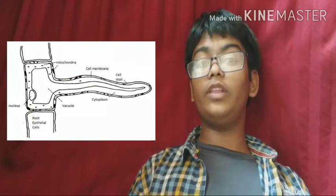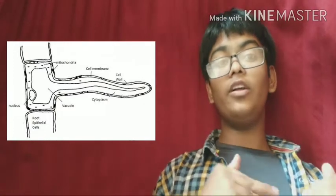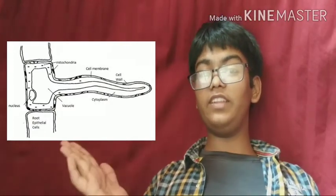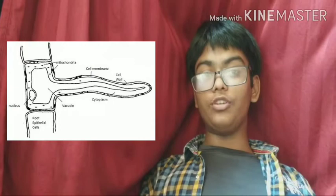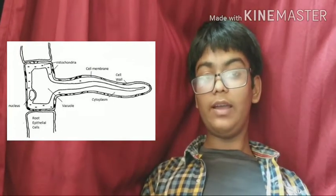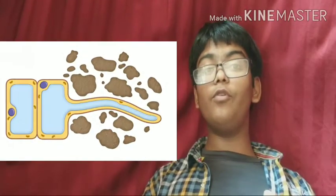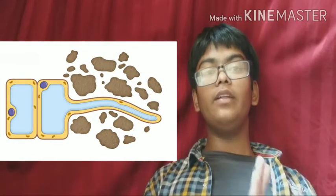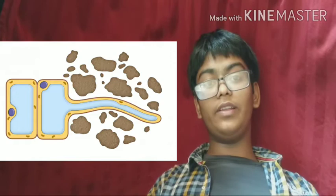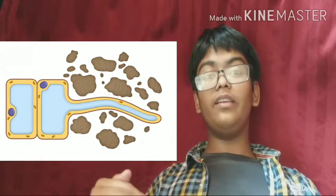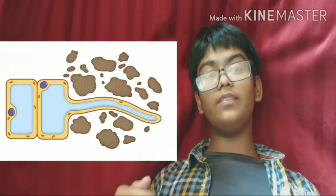The root hair cell is an extension of the epidermal cell, as we can see on screen. The root hair has an outer cell wall and an inner cell membrane. The outer cell wall is a fully permeable membrane — it allows all substances in. The inner cell membrane is semi-permeable, so it allows only some substances in.